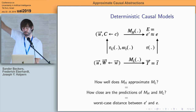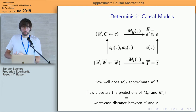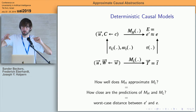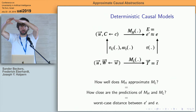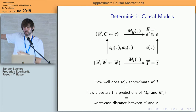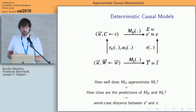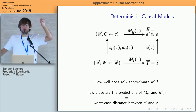But you might also reach that value by another route: start with the context, move the low-level context up to a high-level context, take the low-level intervention and move it up to the corresponding high-level intervention, then plug both into the high-level causal model to get E prime. When is MH an approximate abstraction of ML? Since causal models are about predictions under interventions, we'd like the worst-case distance between the two routes — between E and E prime — to not be very large.